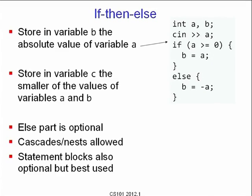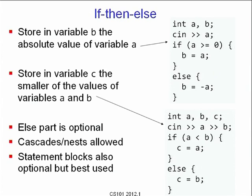Here is another example: store in variable C the smaller of the values of A and B. We declare 'int A, B, C' and read A and B. 'if (A < B) C = A; else C = B.' That is how you take the minimum of two values.